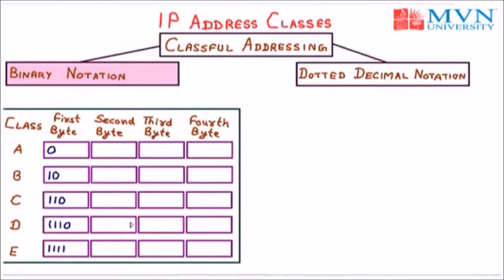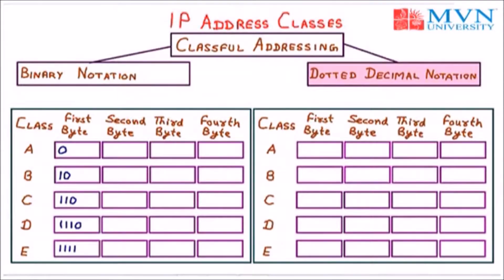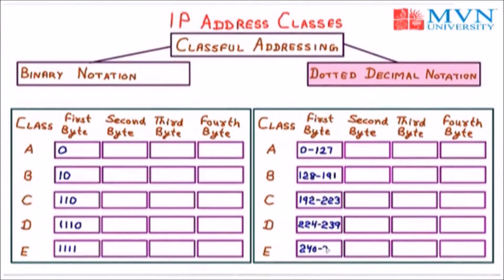Now we come to the dotted decimal notation of classful addressing. It is again divided into five parts: A, B, C, D, and E — same as binary notation, but the first byte values differ. Whenever an IP's first byte is in the range 0 to 127, that is class A. If it is in the range 128 to 191, that is class B. If it is in the range 192 to 223, that is class C. The range 224 to 239 is class D. And if the IP is in the range 240 to 255, that is class E.